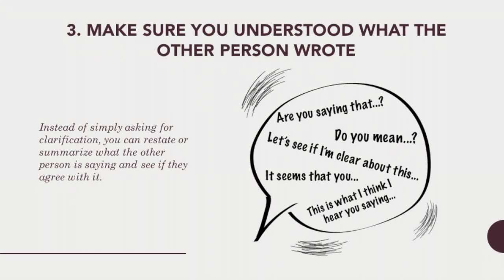Number 3: Make sure you understood what the other person wrote. In Unit 2, we saw some ways that you can make sure that you understood. Many of these include clarifying questions. When the other person answers you, he or she may become clearer about his or her ideas by explaining the situation better. Because of the wait time between responses in our written discussions, you might want to save time. Instead of simply asking for clarification, you can restate or summarize what the other person is saying and see if they agree with it.